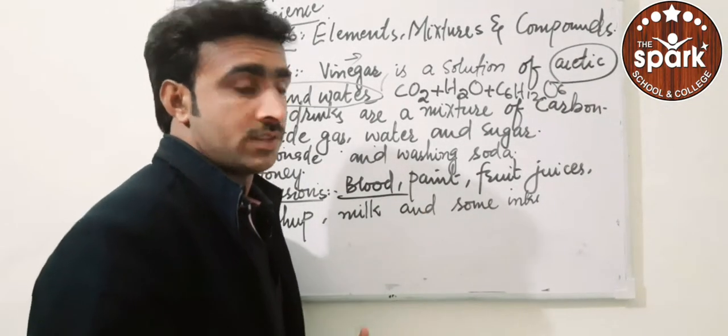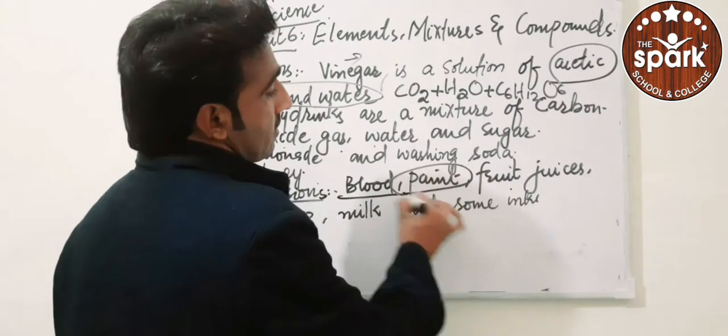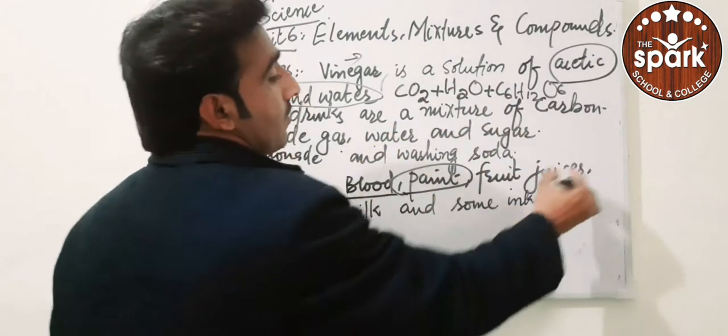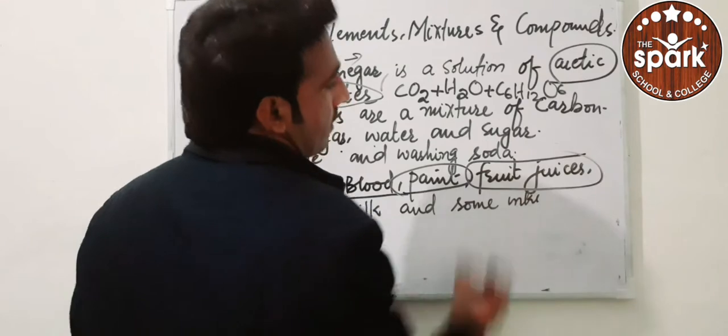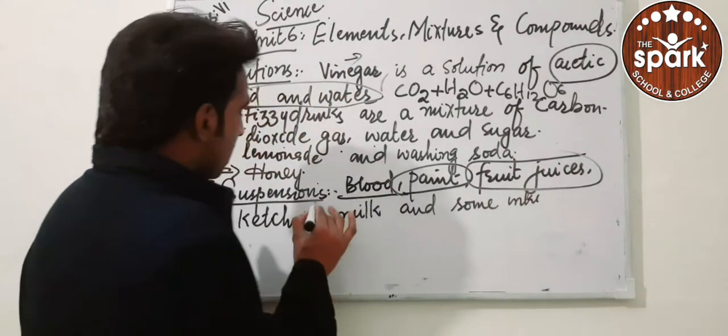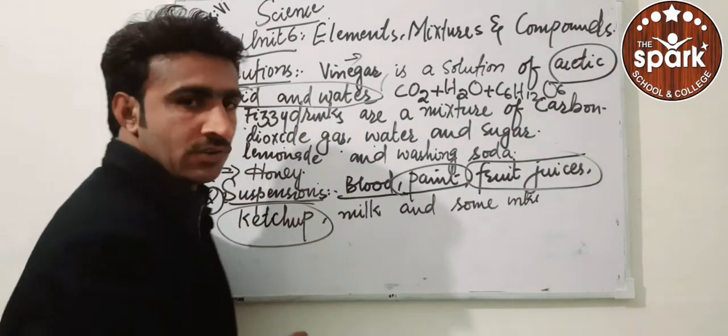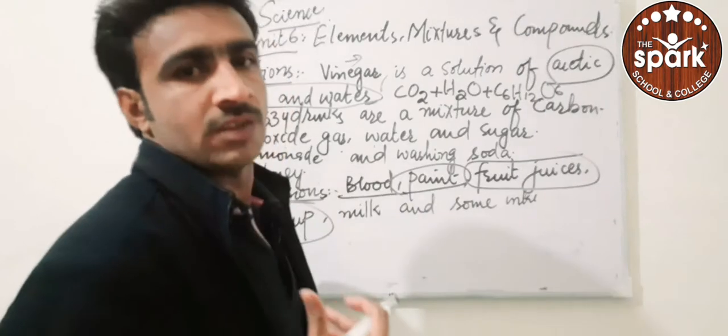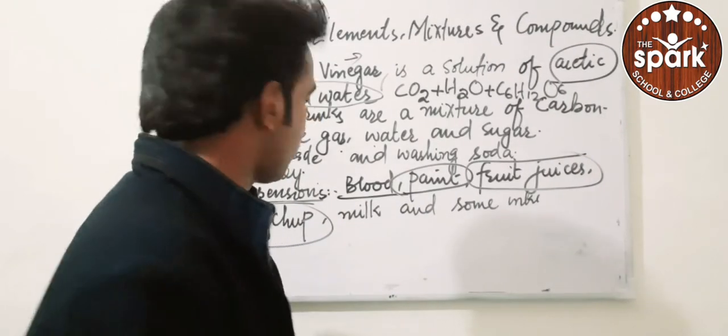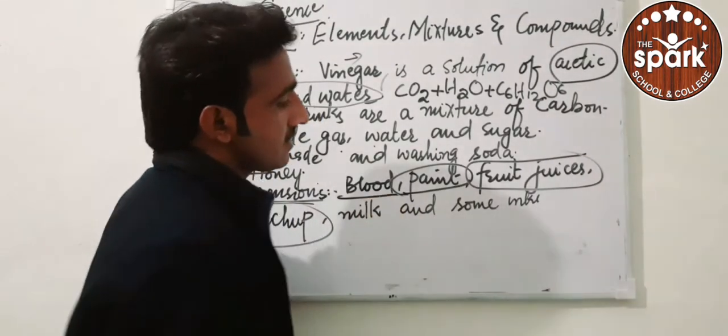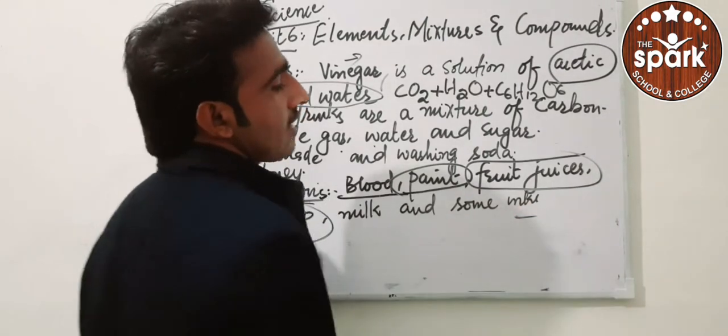Paint or colors used on walls, or fruit juice that we drink - this is a suspension. Ketchup that we use on burgers and different foods, milk, and some inks - these are the suspensions.